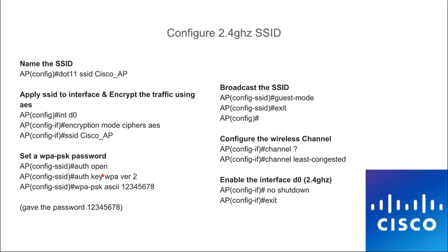Set authentication open — all that means is there are no device restrictions, but we are still setting a password. The password is 12345678. Then we need to broadcast the network by typing 'guest-mode' — that broadcasts the network from the wireless frequency. Set the wireless channel to least congestion or you can put channel 1. Finally, type 'no shutdown' to enable D0, which is the 2.4 GHz frequency.